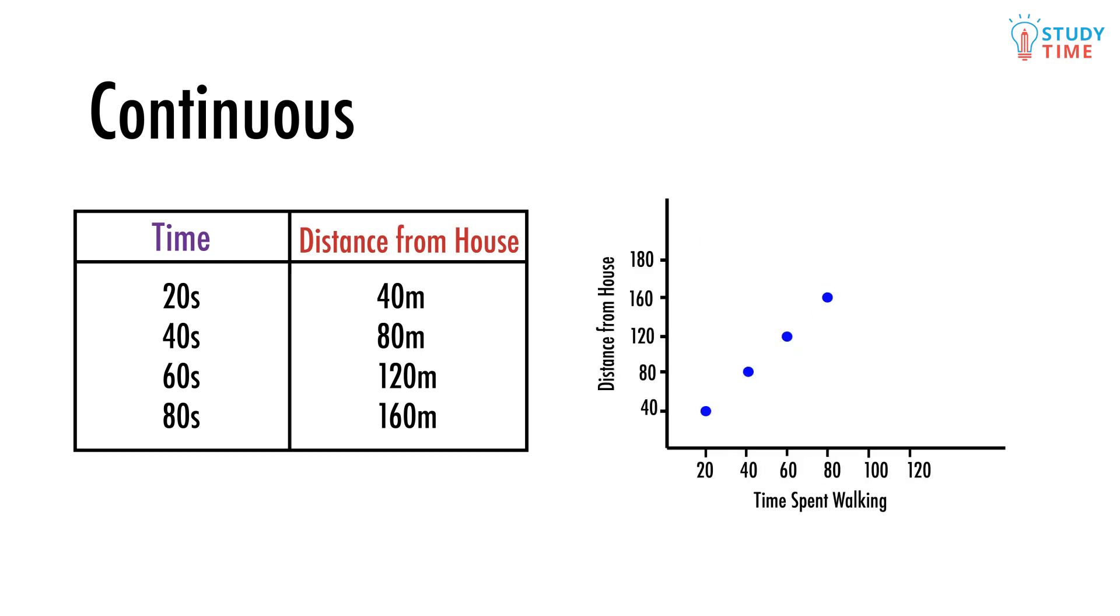If you walked at the same speed, then you'd always be covering the same amount of distance over the same amount of time. Our points would line up, and it would be totally okay to draw a line through them. This is a linear graph representing linear data that changes the same amount the whole time.